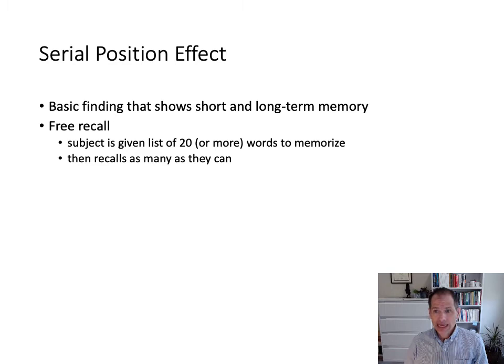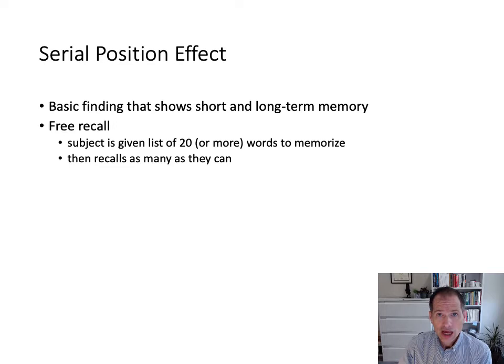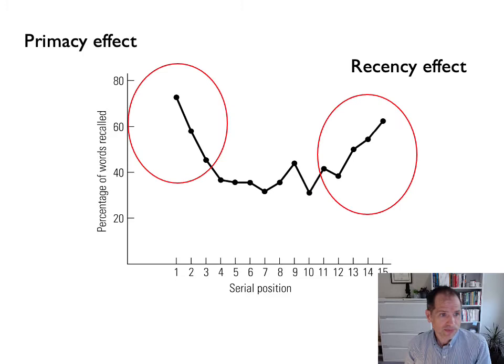So we see a serial position effect: good performance at the beginning, good performance at the end, and not so good in the middle. The question then is how do we account for this pattern of results within different models or theories of short-term and long-term memory?